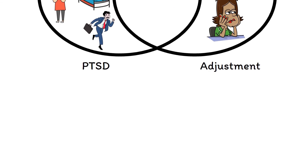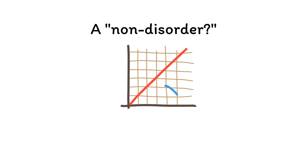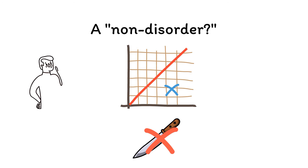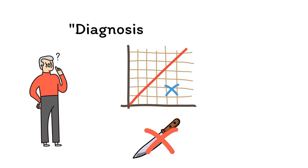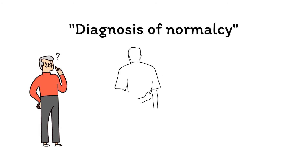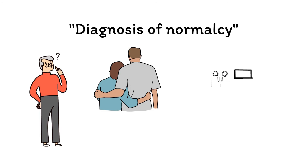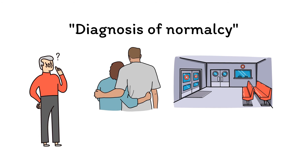So if adjustment disorder is basically a non-disorder that isn't severe enough to be a full-blown depressive or anxiety disorder, and occurs in response to a stress that isn't life-threatening or violent enough to be trauma, what purpose does it serve exactly? In my view, the best way of seeing adjustment disorder is as a non-stigmatizing diagnosis of normalcy that recognizes that some degree of distress is normal and expected following a major life change, but still allows patients to access helpful forms of treatment.